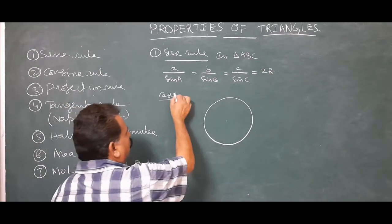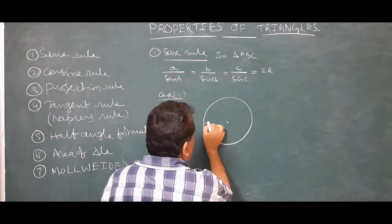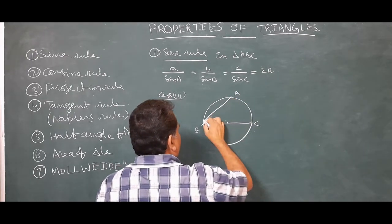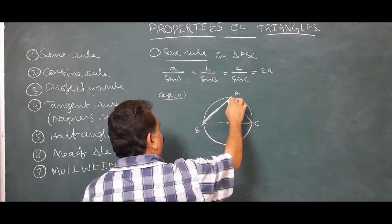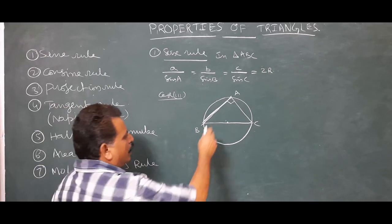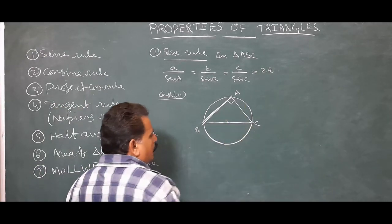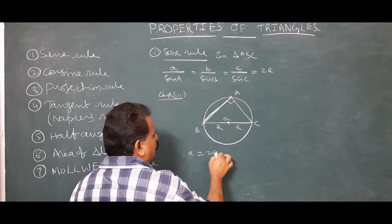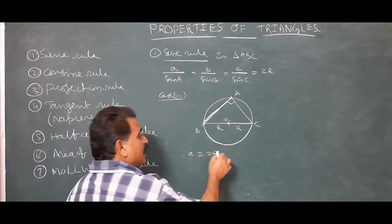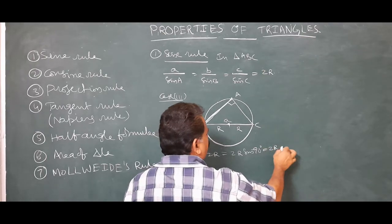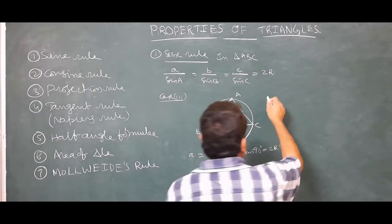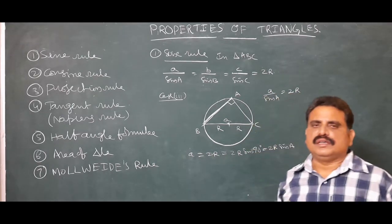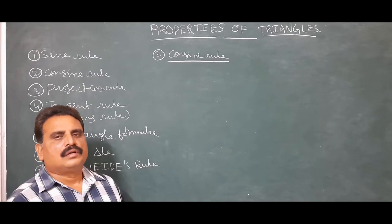Case three: the right-angled triangle. Here the circumcenter is the midpoint of BC, and if A = 90°, then BC is the diameter, so a = 2r. Since sin 90° = 1, we have a = 2r sin A, giving a / sin A = 2r. Similarly b / sin B = 2r and c / sin C = 2r. Therefore the sine rule is proved for all three cases.